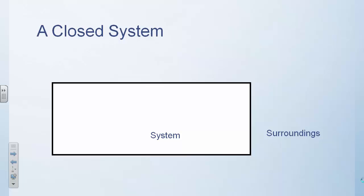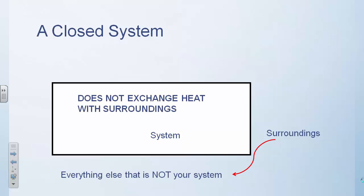A closed system means that heat does not exchange between the system and the surroundings. Whatever heat transfer is going on only flows to other objects within that system. We're assuming no heat escapes from the system to the surroundings and no heat enters from the surroundings into the system. Another way to describe this is an isolated system.